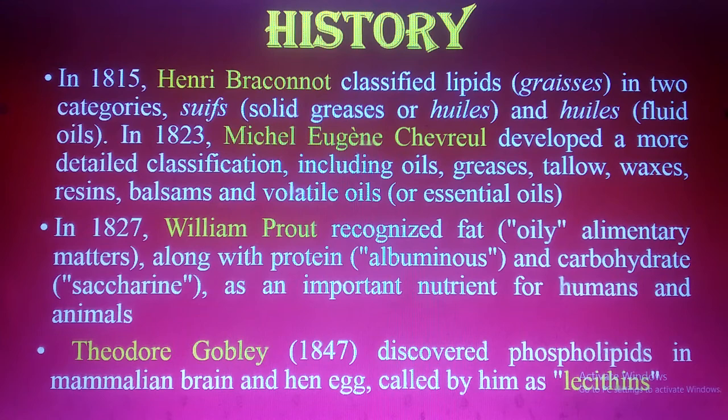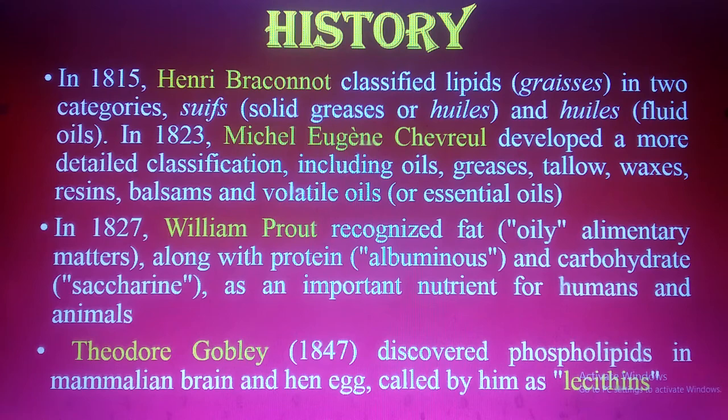In 1823, Michel Eugène Chevreul developed a more detailed classification including oils, greases, tallow, waxes, resins, and volatile oils. In 1827, William Prout recognized fat — as an oily elementary matter — along with protein (albuminous) and carbohydrate (saccharine) as important nutrients for humans and animals. I have discussed proteins and carbohydrates in detail, so do go through my lectures on those topics.